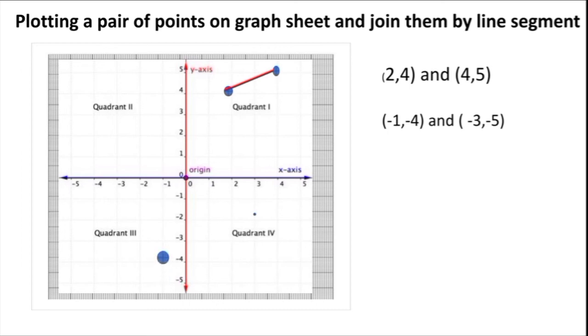So now (-1,-4). See it is both are negative, so it will come in quadrant 3. So this is (-3,-5). Now I am going to join these two points with a line segment. Now this is the line segment of (-1,-4) and (-3,-5). So these are the line segments.